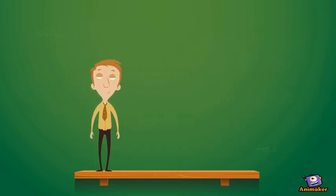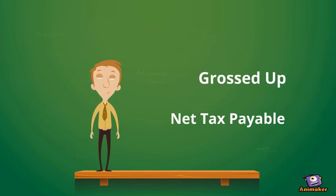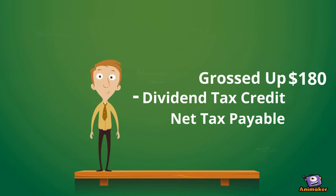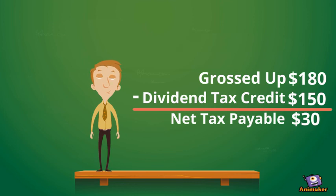So if we look at Bob's net tax payable, it would be the result of his grossed-up amount, minus his dividend tax credits, which would be $180 minus $150 for a total of just $30 of tax payable.